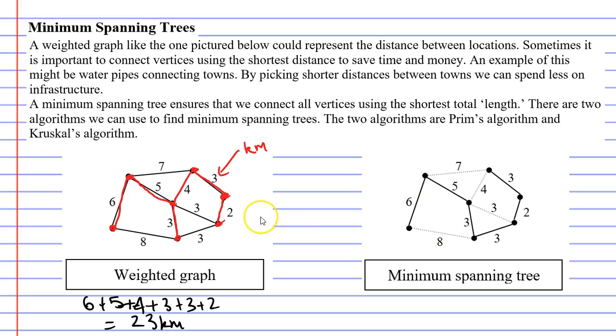What do I get when I add these up? Six plus five plus there's three threes here and a two, and when I add this up I actually get 22 kilometres of piping. So I've saved about a kilometre of piping here.